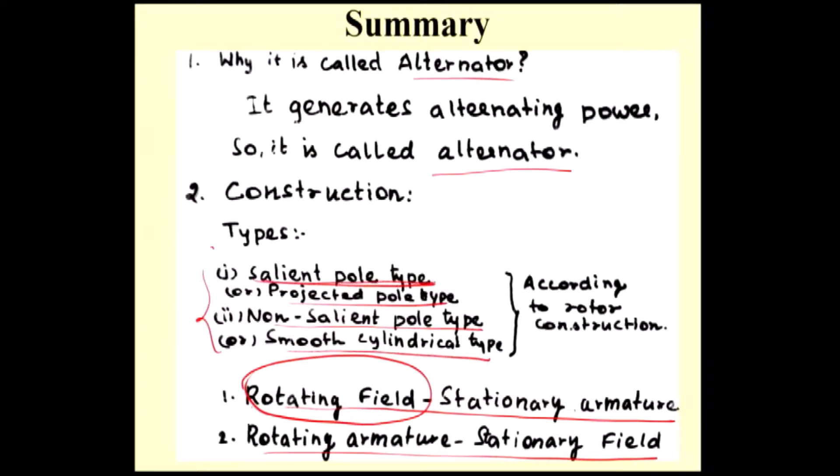In salient pole alternator or projected pole alternator, the air gap is not uniform, so this type of alternator is suitable for low speed application. Non-salient pole alternator is a smooth cylindrical alternator where the air gap will be uniform.